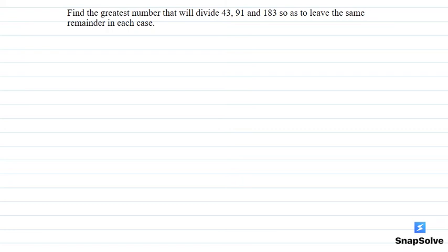Hello everyone, I'm a teacher. Let me explain this question to you. Find the greatest number that will divide 43, 91, and 183 so as to leave the same remainder in each case. So first, let's write: find the greatest number which divides 43, 91, and 183 so as to leave the same remainder.